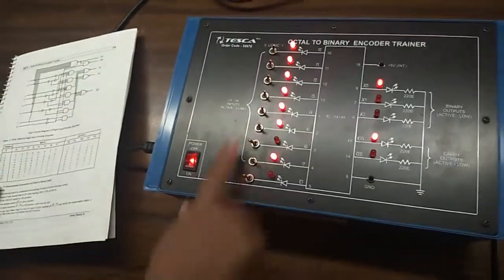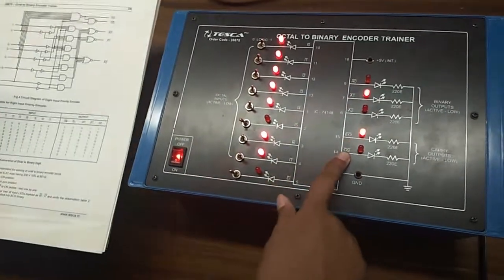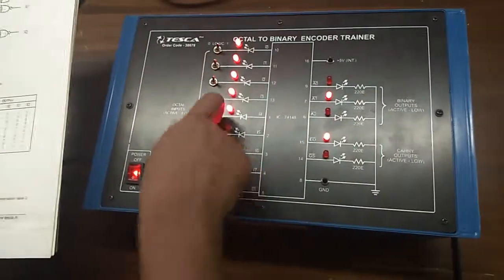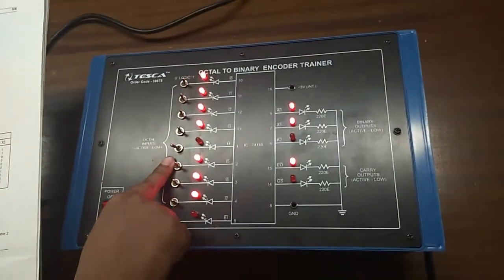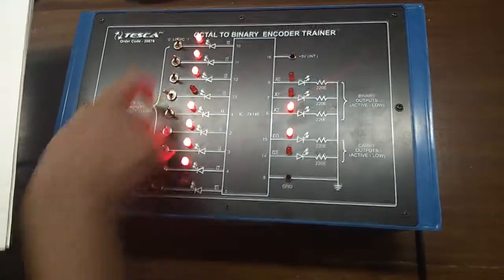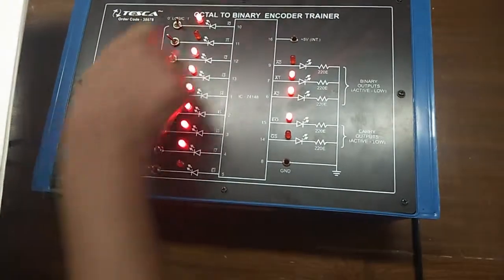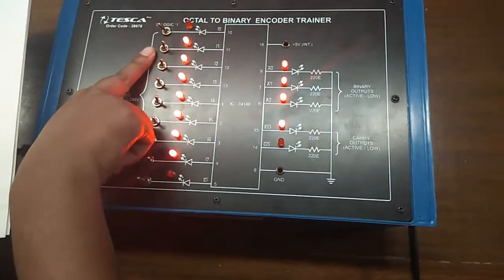Then keep this on and give this 0 and observe the output here and verify this with the truth table.